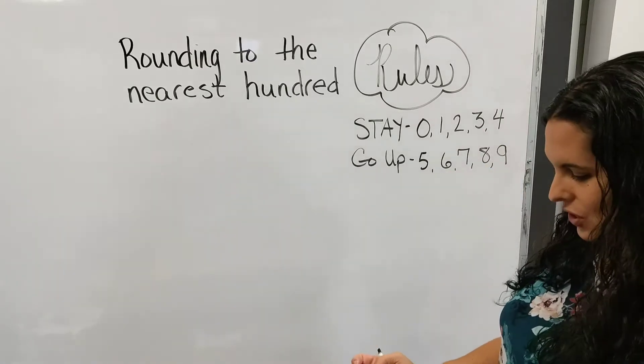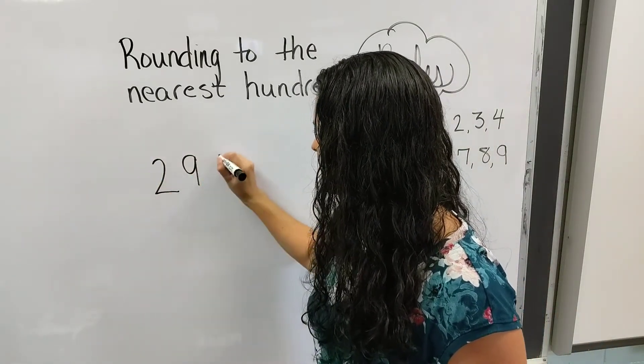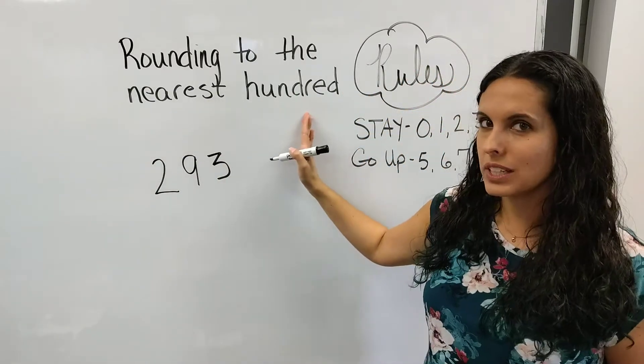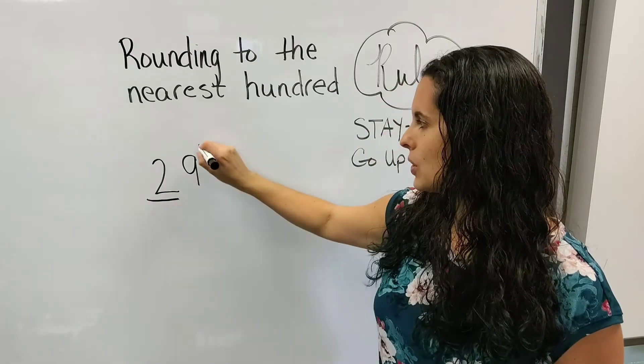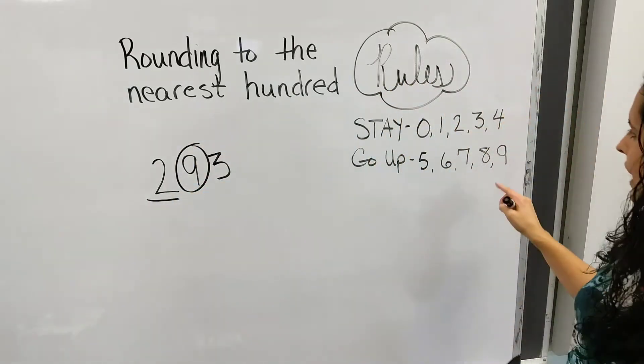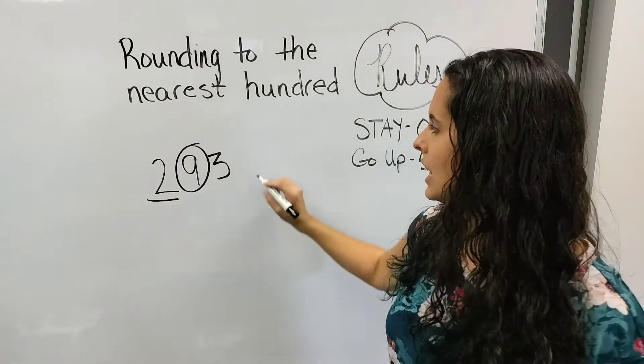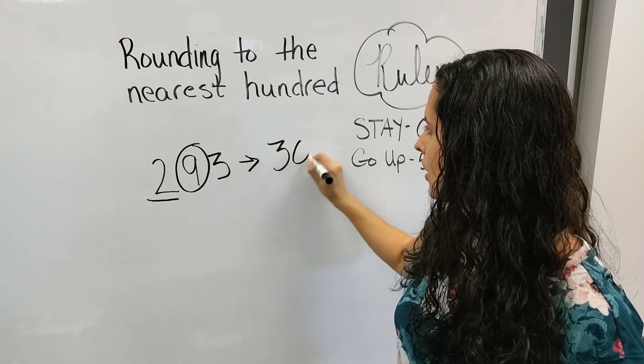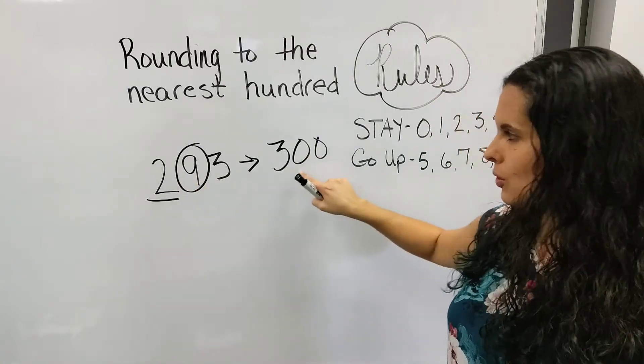So we're going to start with an example. Let's do 293. If we're going to round to the nearest hundred, we need to underline our hundred's place, and it's a 2. We circle the number behind it, it's a 9. 9 in our rule says go up, so it tells the 2 to go up to a 3. So 293 rounds to 300. The 2 goes up to a 3, and then these numbers go to zeros.